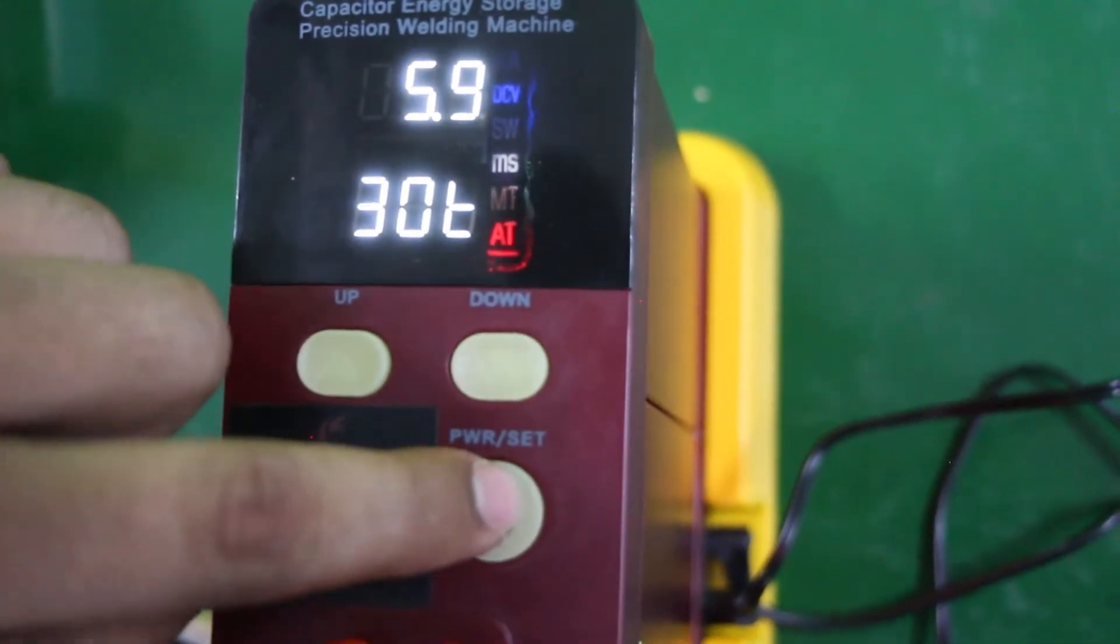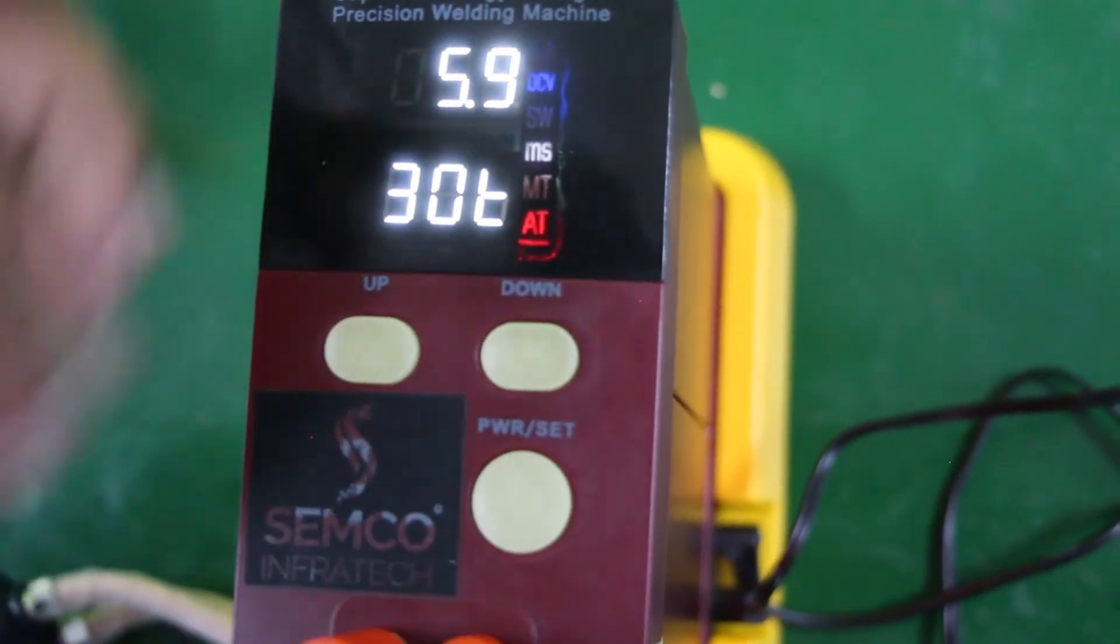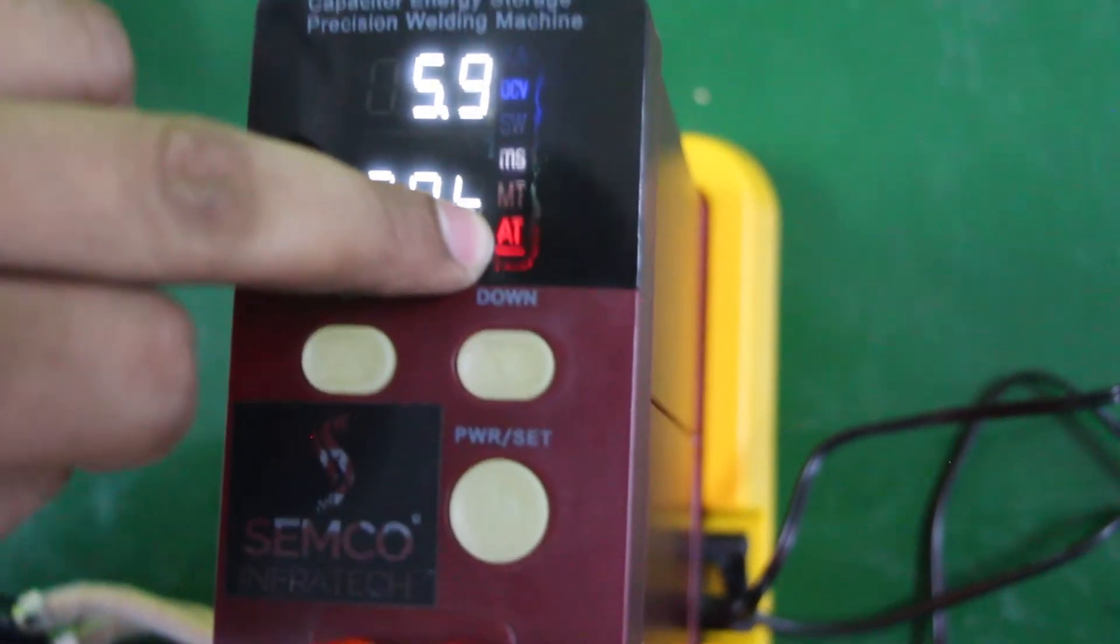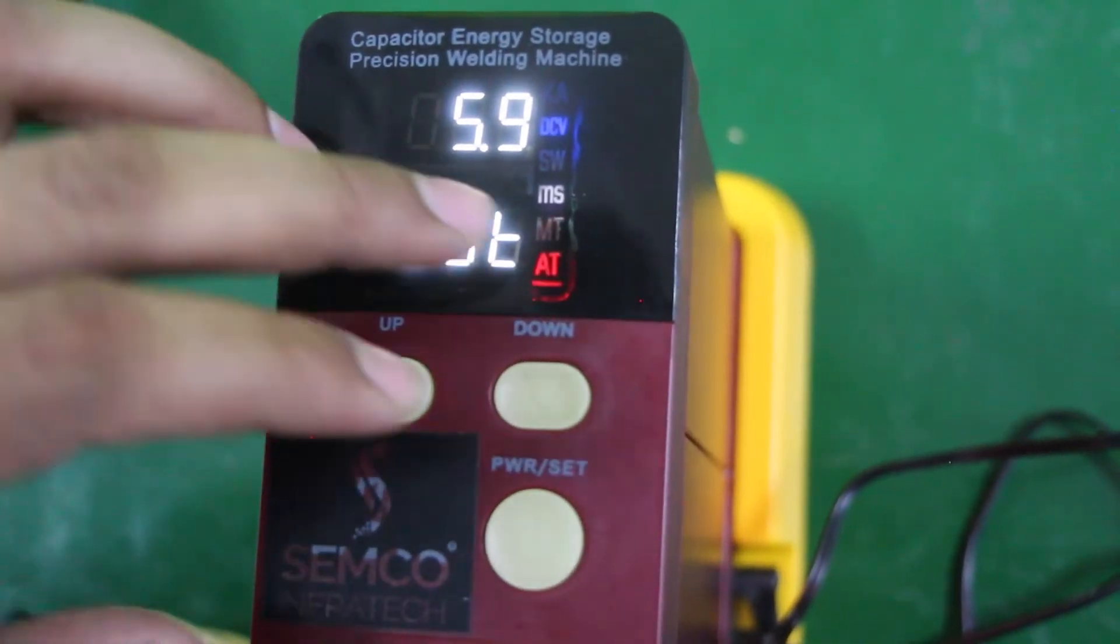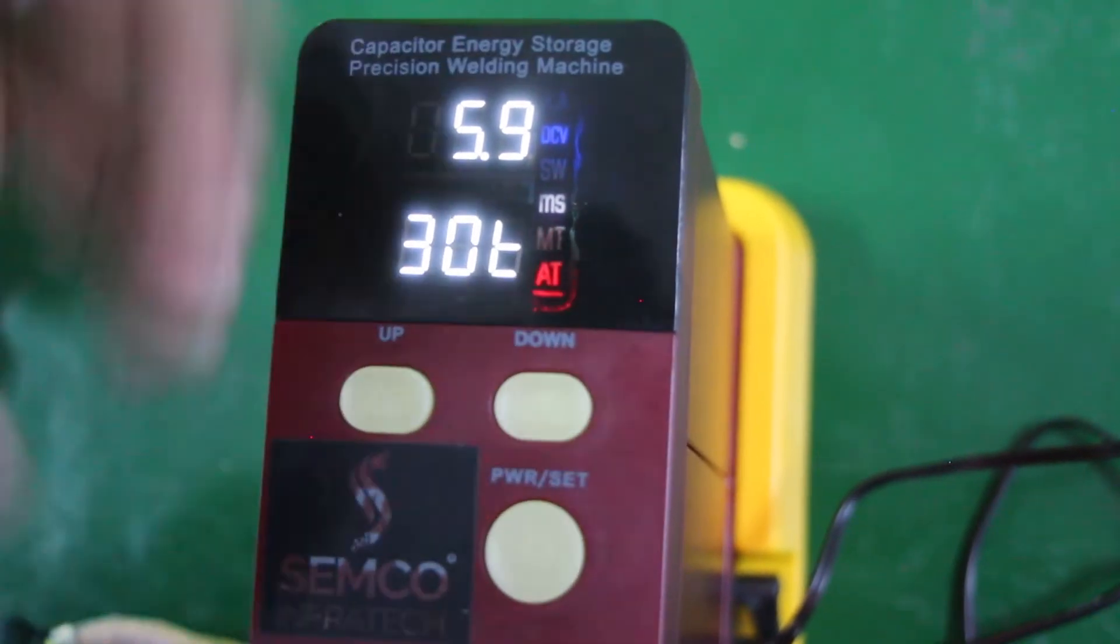And again if we press this button then it will shift from left to right. And again now we see this blinking. Now from here we can switch from automatic mode to the manual mode like this.